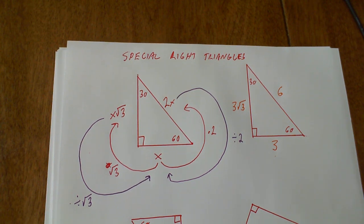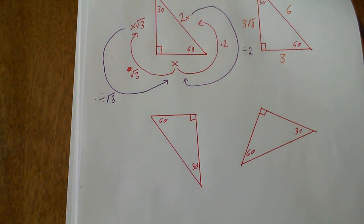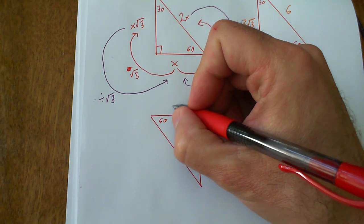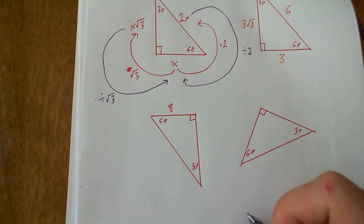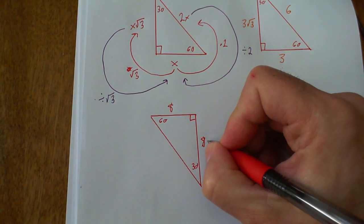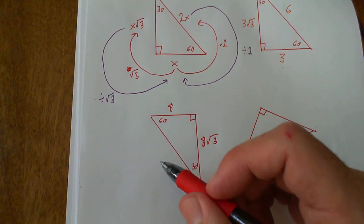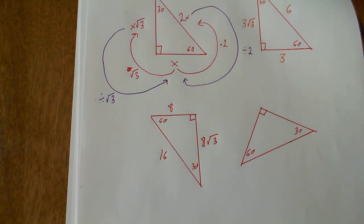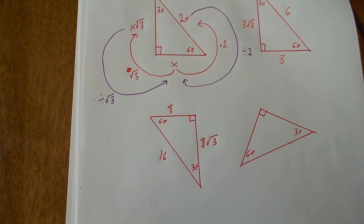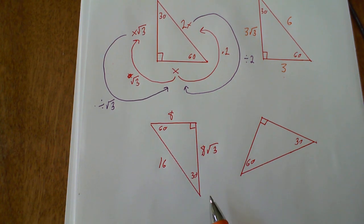It doesn't matter how the triangle is oriented. Let's say my 30 is eight. To find my 60, I multiply by the square root of three and get eight root three. To get my hypotenuse, I multiply my 30 times two, and eight times two is 16. Now, even though this side has a square root of three, it doesn't mean the given side always has a square root of three in the answer.